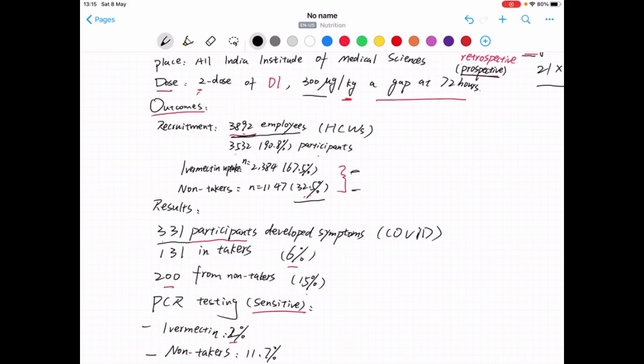131 participants were Ivermectin takers, which occupies 6% of total population. And 200 from non-takers, which is 15%.